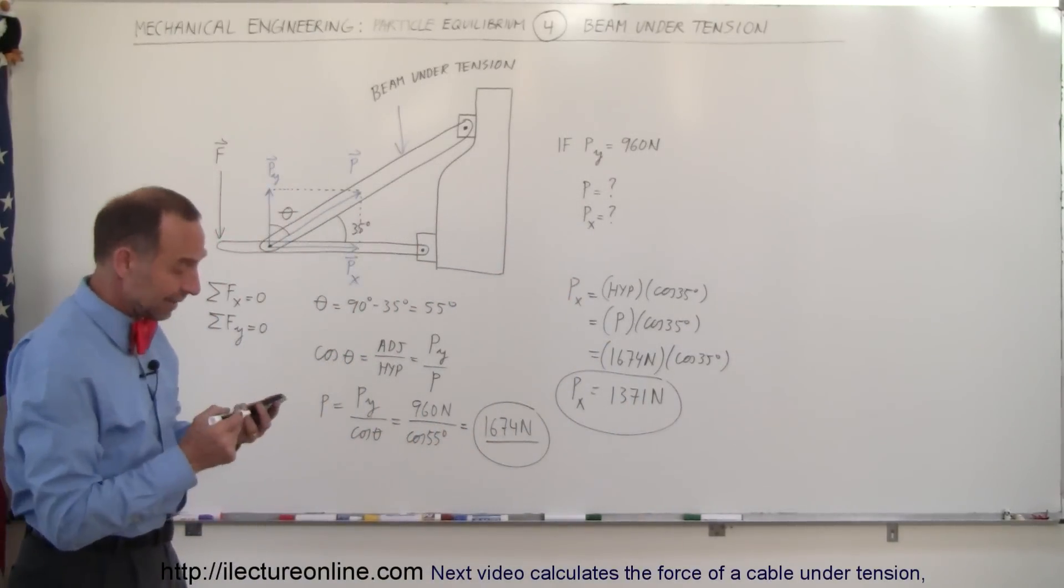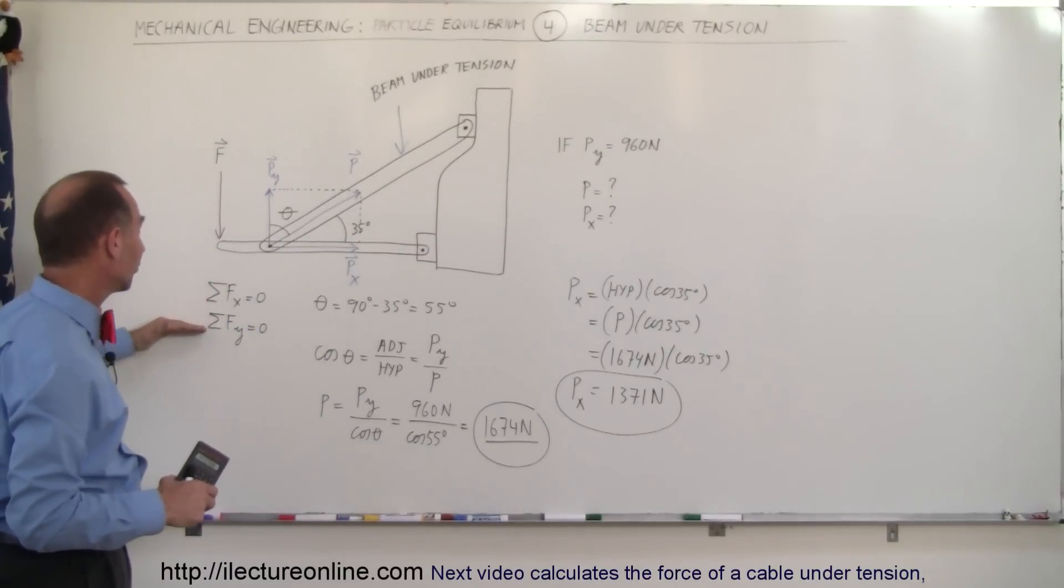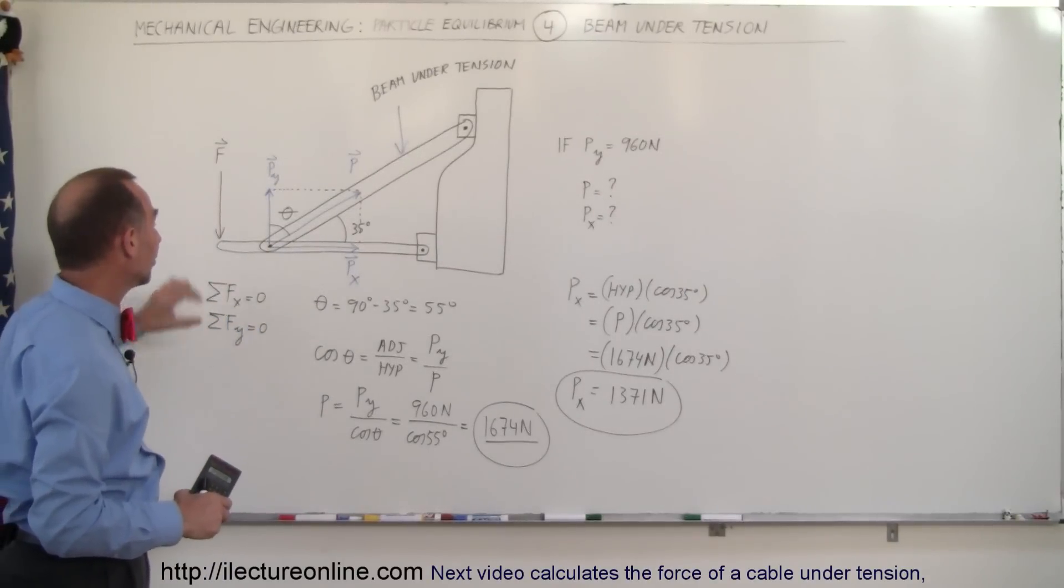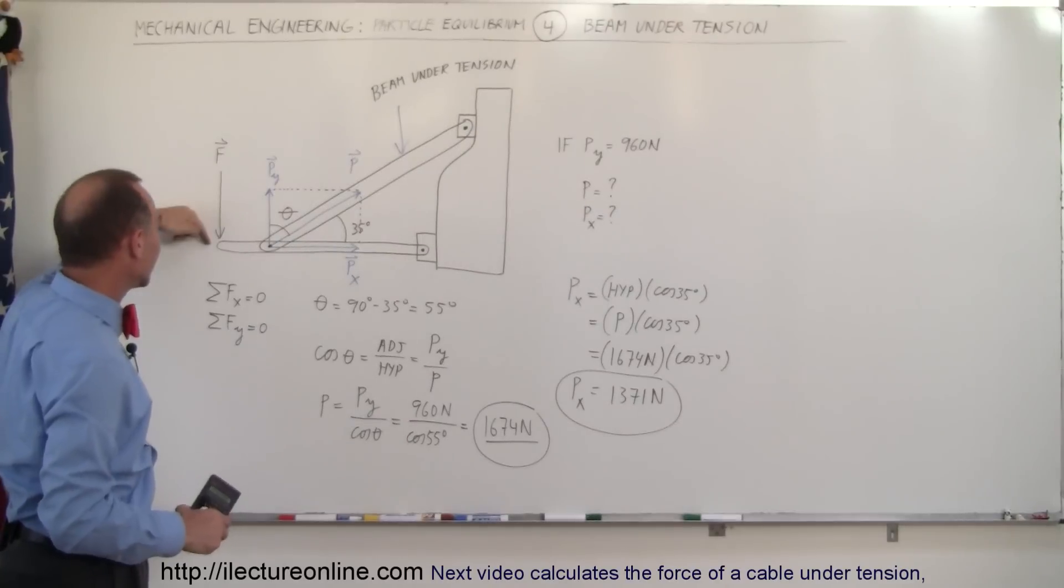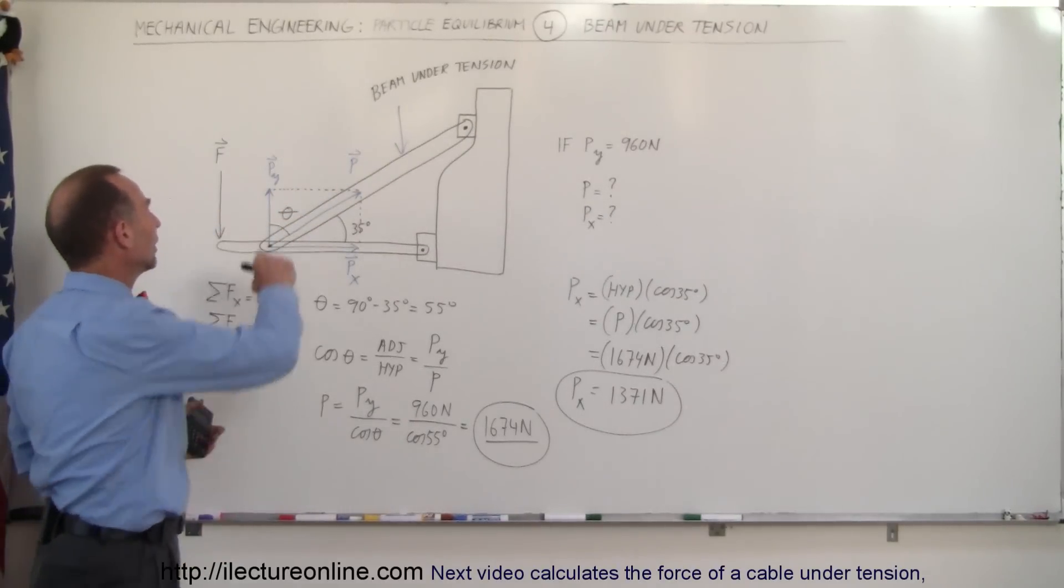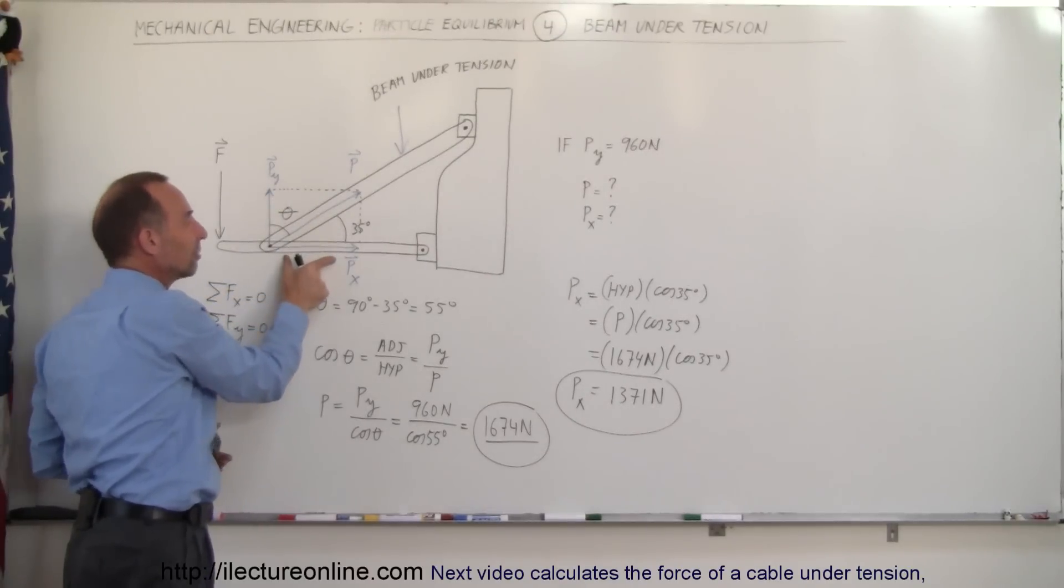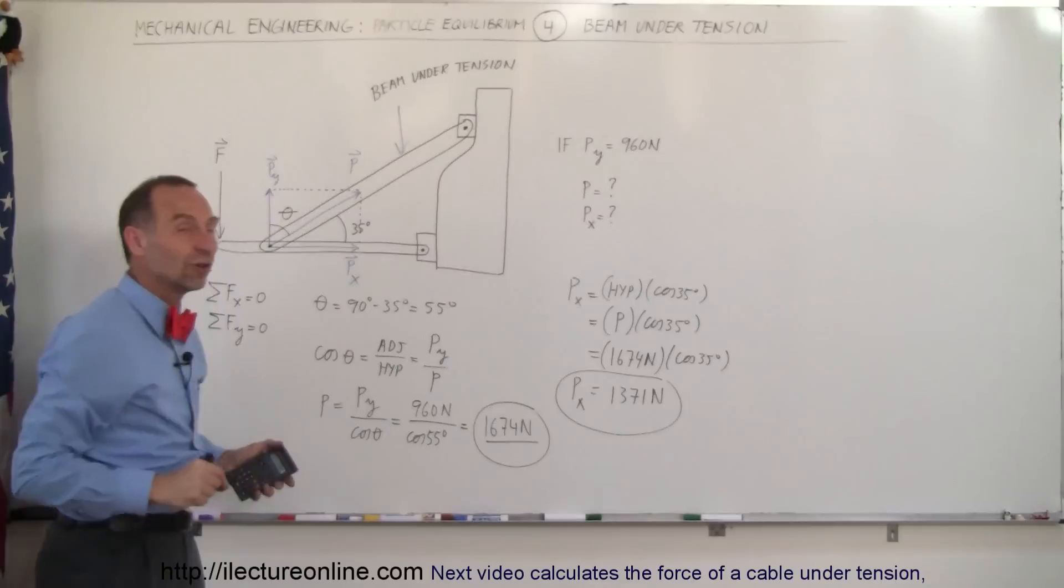And that is how we do that. Again, it all comes down to the sum of the forces in the x and y direction must equal zero. To counterbalance the force at the end of the beam, there is a force of tension on the beam. They gave us the y component of that force, we had to figure out the force itself and the x component by using these relationships.